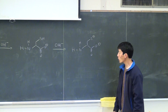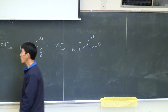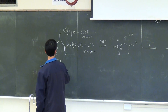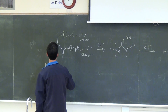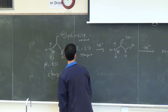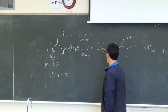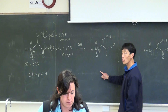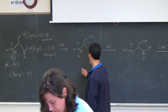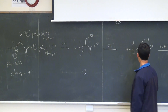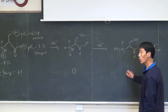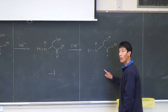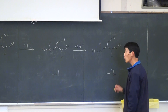Looking at the charges: at low pH, cysteine has a charge of +1. As pH increases, the charge becomes 0, then -1, and finally -2.